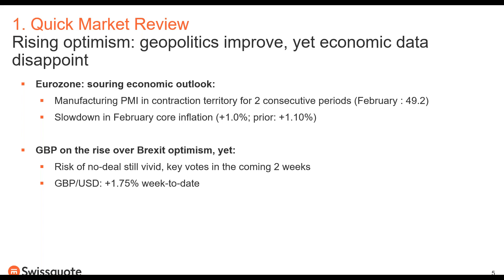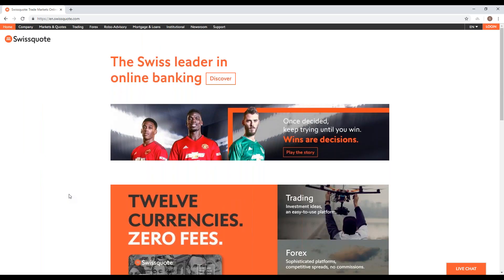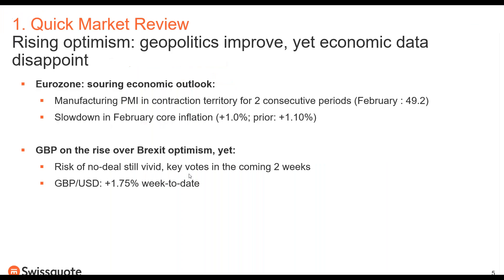Eurozone: a souring economic outlook. Manufacturing PMI has been in contraction territory for two consecutive periods, with a slowdown in February core inflation as well. In our 2019 market outlook published on swissquote.com, we already expected a slowdown in manufacturing in 2019 and 2020. We now have confirmation that manufacturing is slowing down in the eurozone.